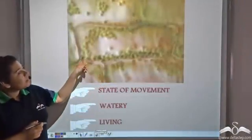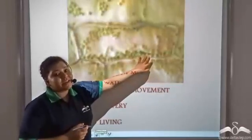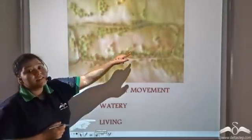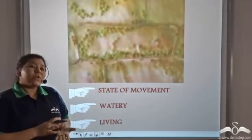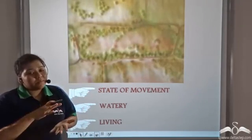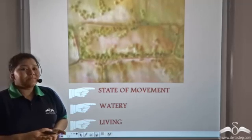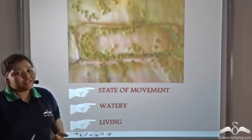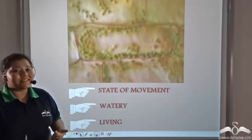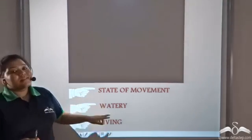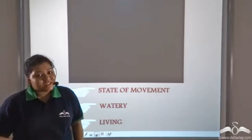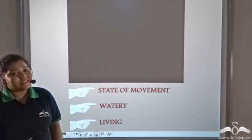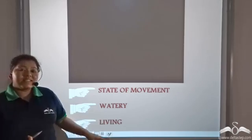This is a plant cell observed under the microscope. See, all the organelles are continuously moving. These organelles are present in and embedded in the cytoplasm, so it means that the cytoplasm is in a constant state of motion. The cytoplasm is watery and because it is in a constant state of motion, we can say that it is living.